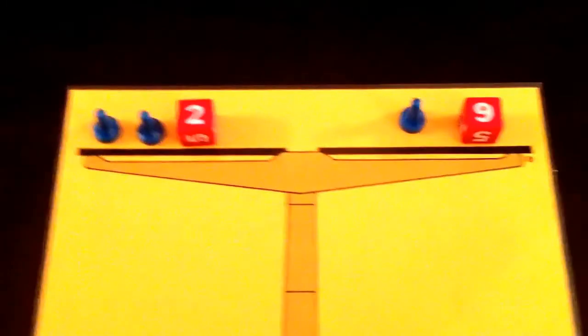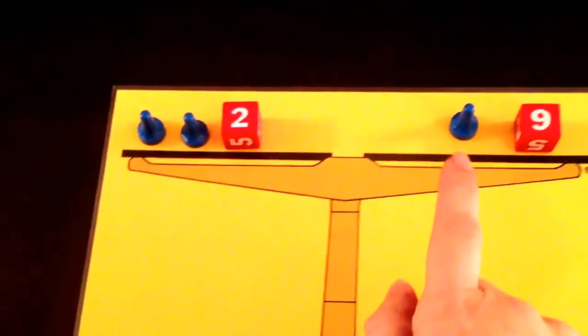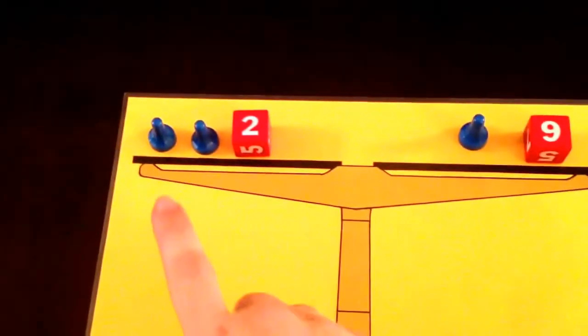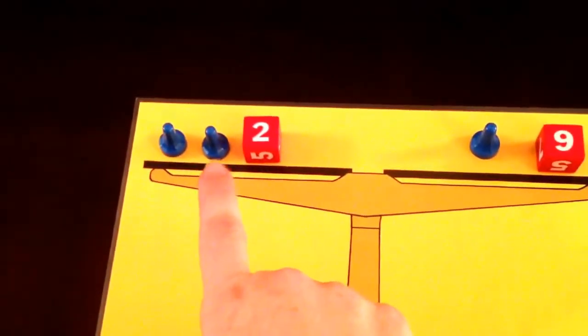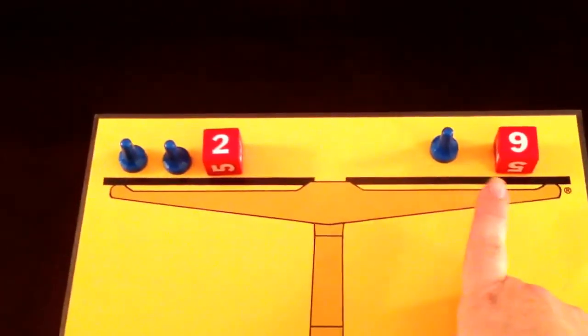So what we're going to do first is we notice that we have two blue pawns on this side, one blue pawn here. So we have two X's and a 2, and on the right hand side we have an X and a 9.